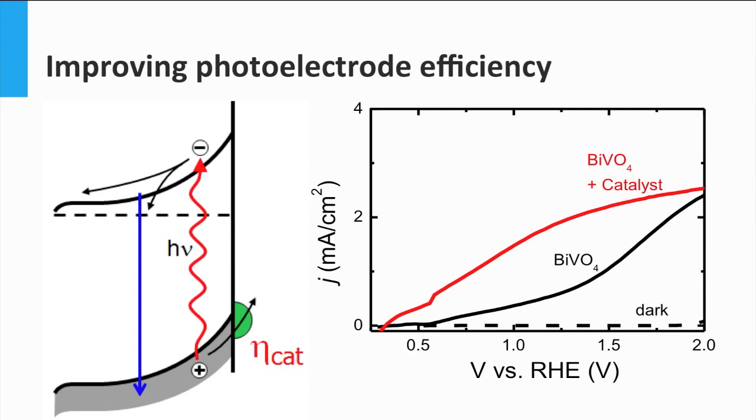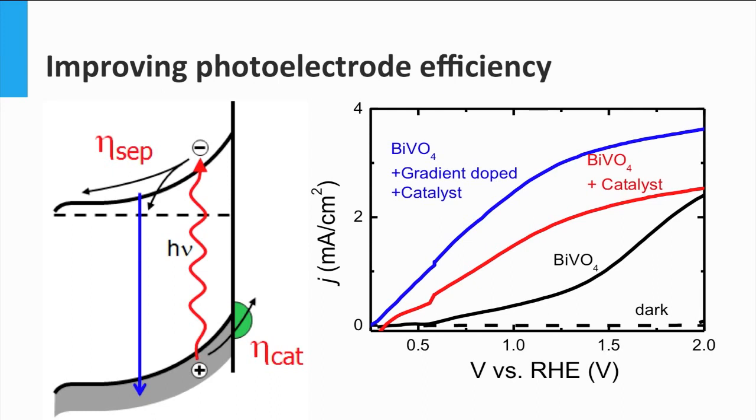The separation efficiency can be improved by introducing an electric field inside the material. One way to do this is to introduce gradient doping, from no doping at the surface to 1% doping close to the back of the electrode. That way we create a depletion region in between the semiconductor and the electrolyte, that will more easily move the electrons from the electrolyte into the semiconductor. The combination of both effects can highly improve the efficiency of the overall device.